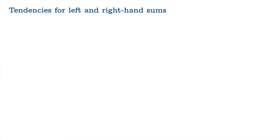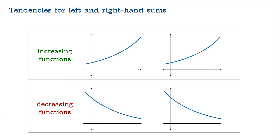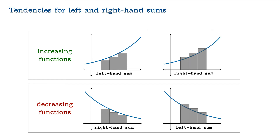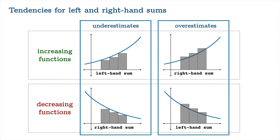Let's talk about tendencies for left and right-hand sums. You could have an increasing function or a decreasing function — functions will often switch, but we'll restrict attention to one or the other. A left-hand sum for an increasing function is clearly smaller than the actual area, and for a decreasing function a left-hand sum is clearly larger. When we look at the right-hand sum, those roles are switched. The upshot: we get underestimates with a left-hand sum for increasing functions or a right-hand sum for decreasing functions, and overestimates with right-hand sums for increasing functions and left-hand sums for decreasing functions.